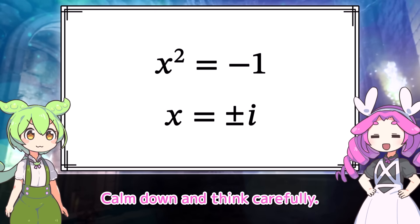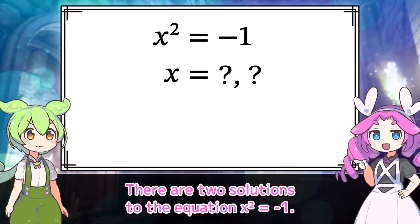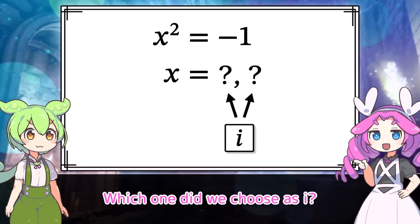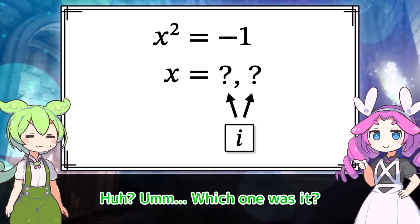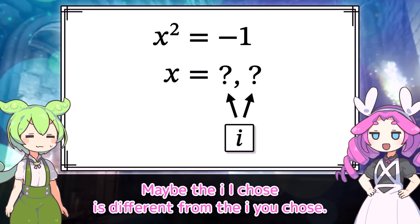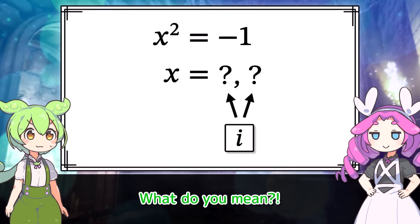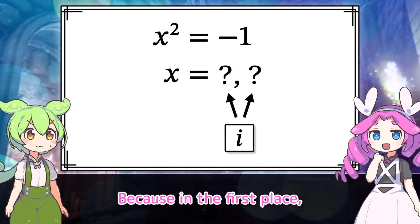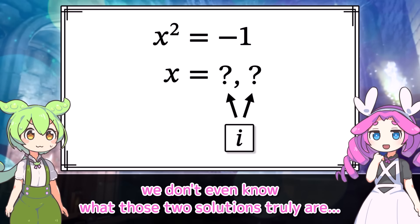Calm down and think carefully. There are two solutions to the equation x squared equals negative one. Now then, which one did we choose as I? We're not really sure — we don't know. Maybe the I I chose is different from the I you chose. Actually, in the first place, we don't even know what those two solutions truly are.